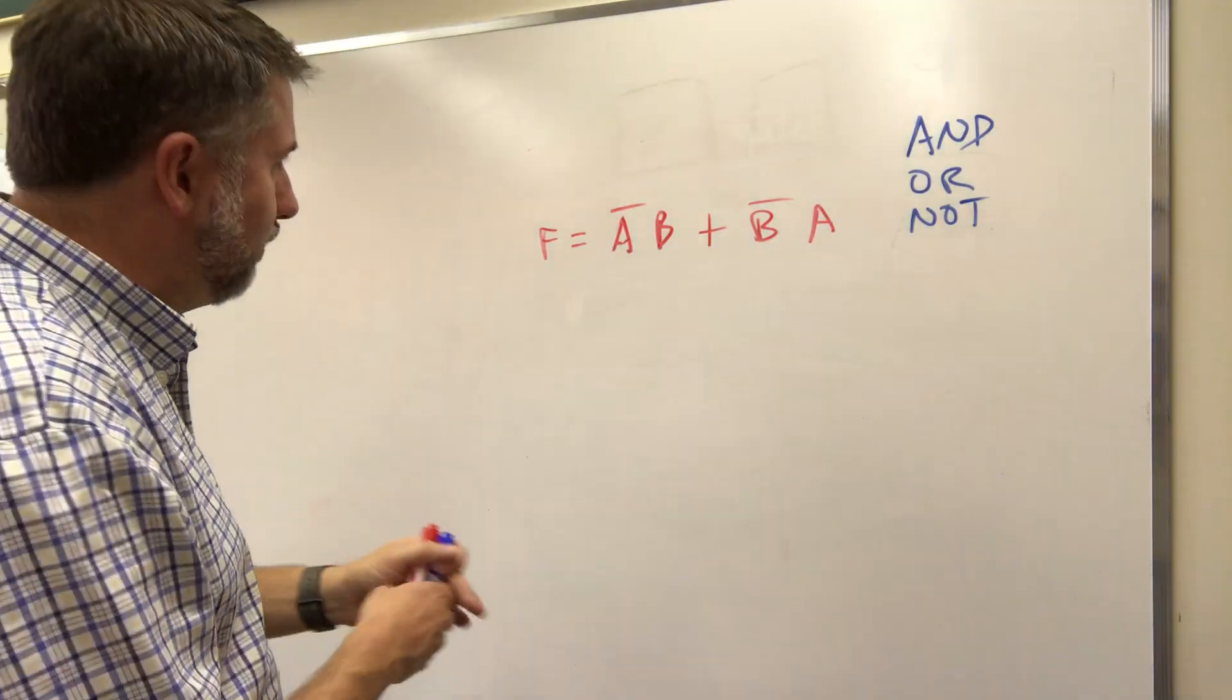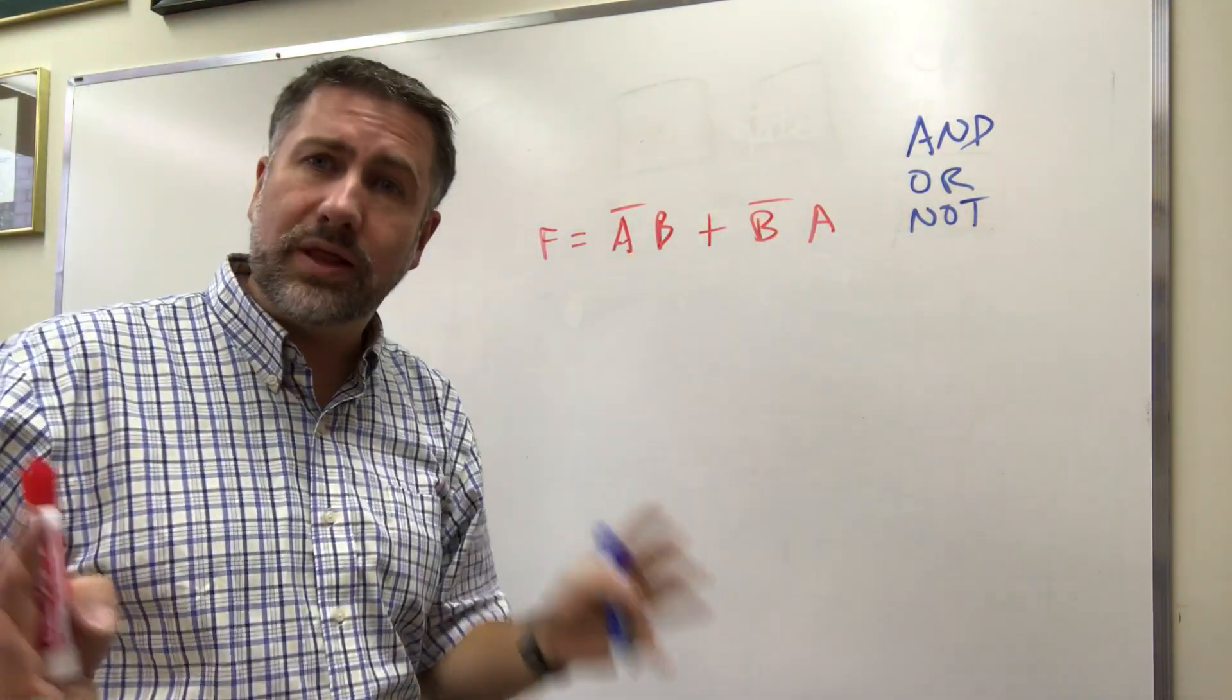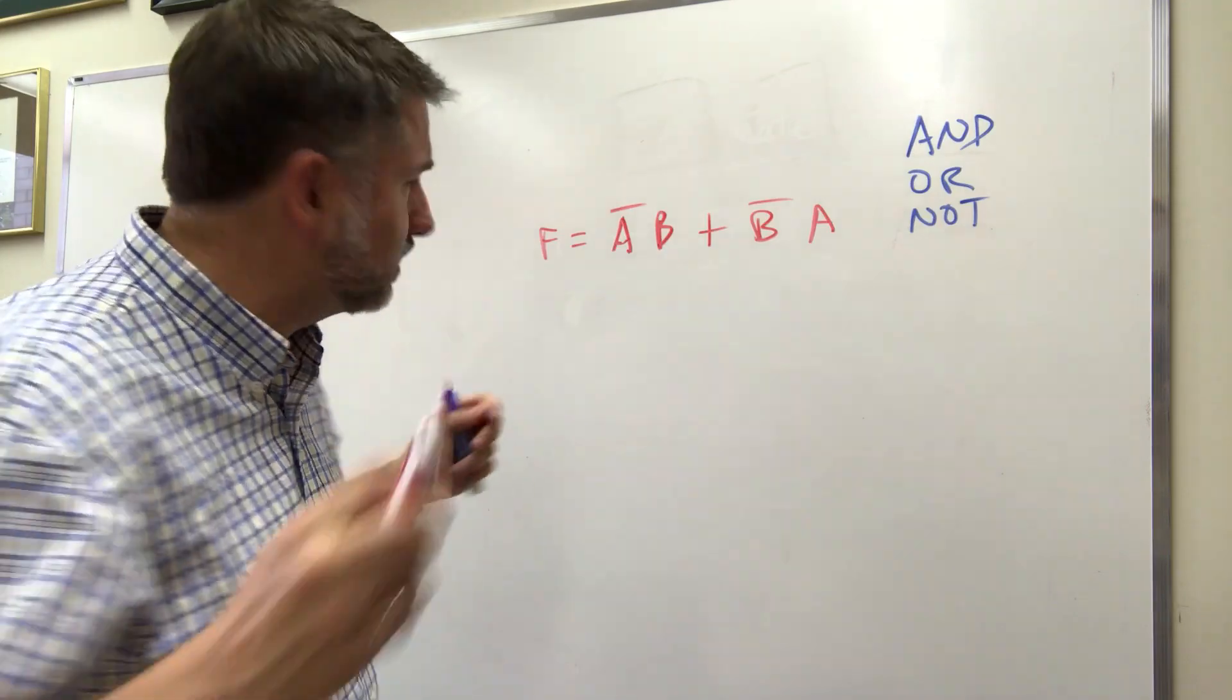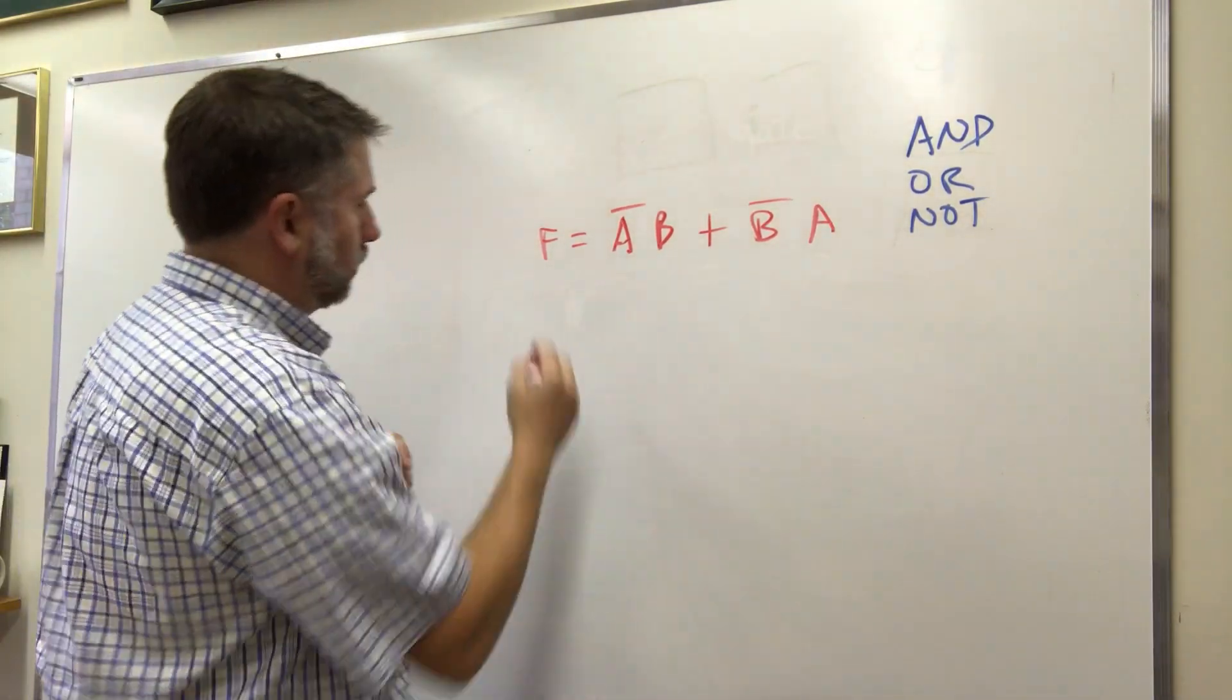If we allow other gates then we might be able to make this simpler by using one of those gates. For example, if we look at the truth table that's one way that we can simplify. There's lots of different techniques.